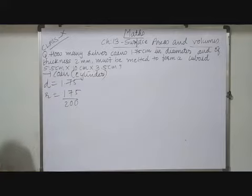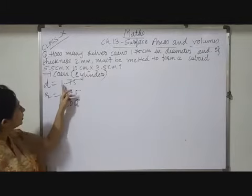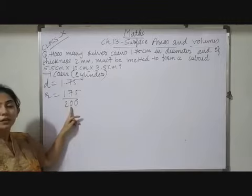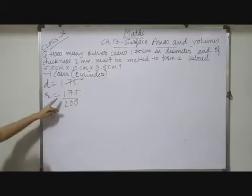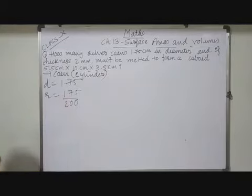May I write down 200? Why? Because to convert diameter into radius I have to divide it by 2, and to remove this decimal here I have multiplied by 100 in the denominator. So here I obtain 175 upon 200, and if you want to simplify, both can be divisible by 25.